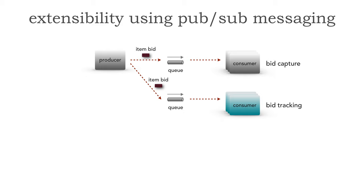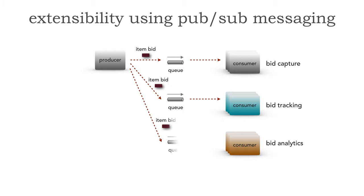The problem is extensibility, because now we also want to analyze those bids. We want to do some bid analytics to determine the average bid price for any auction context, the standard deviation, and the min and max values. So the producer agrees, we add a third queue, and the producer is now modified to send that item bid to that third queue for bid analytics.